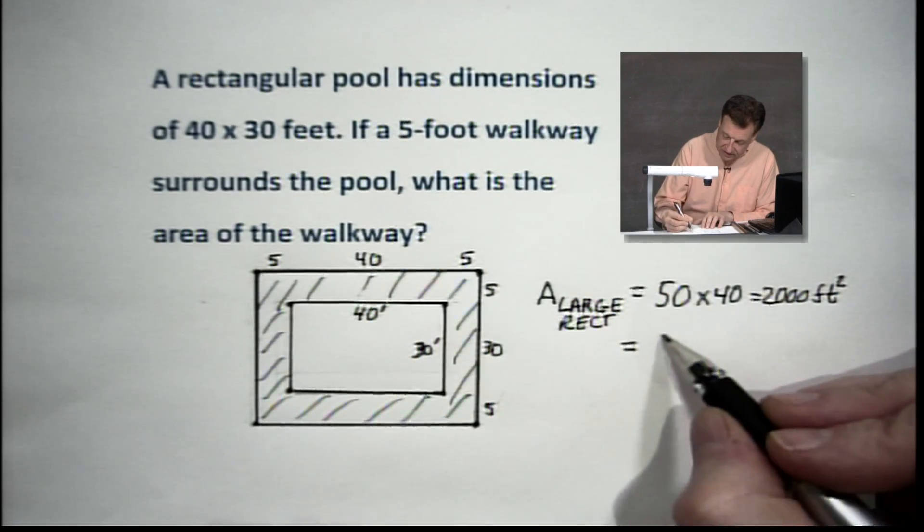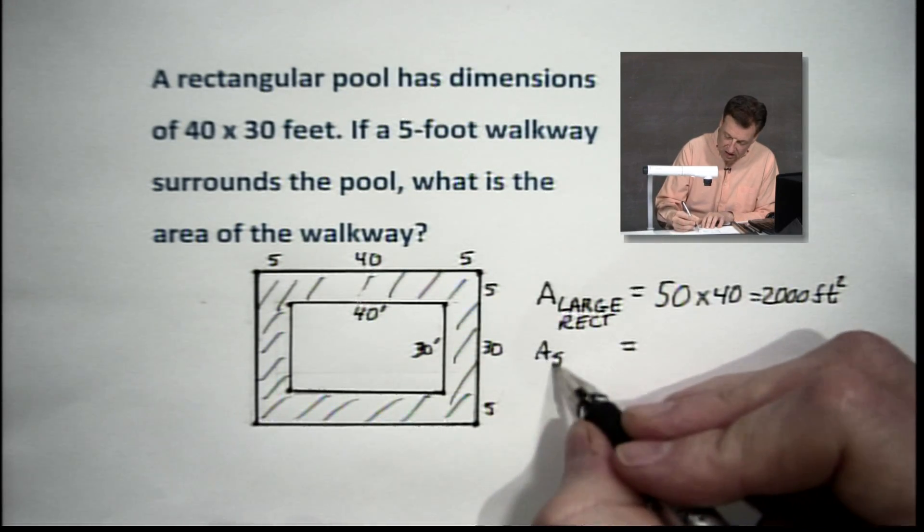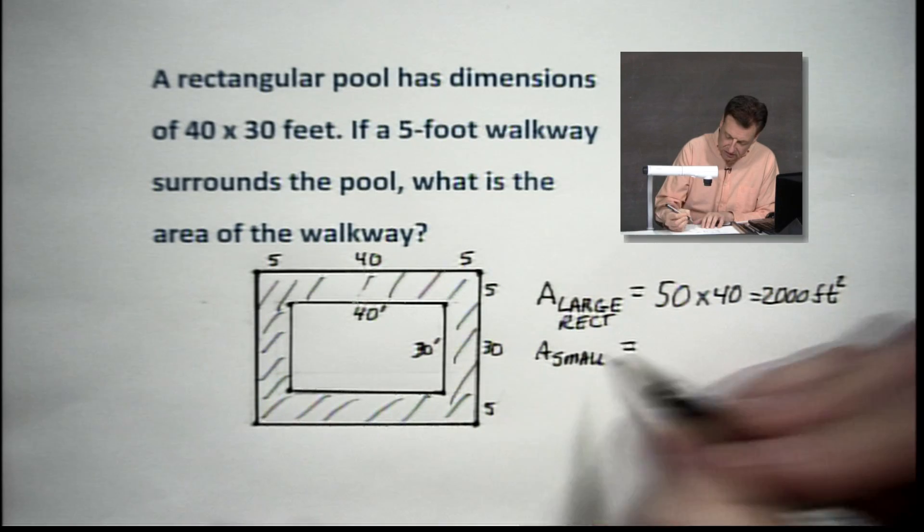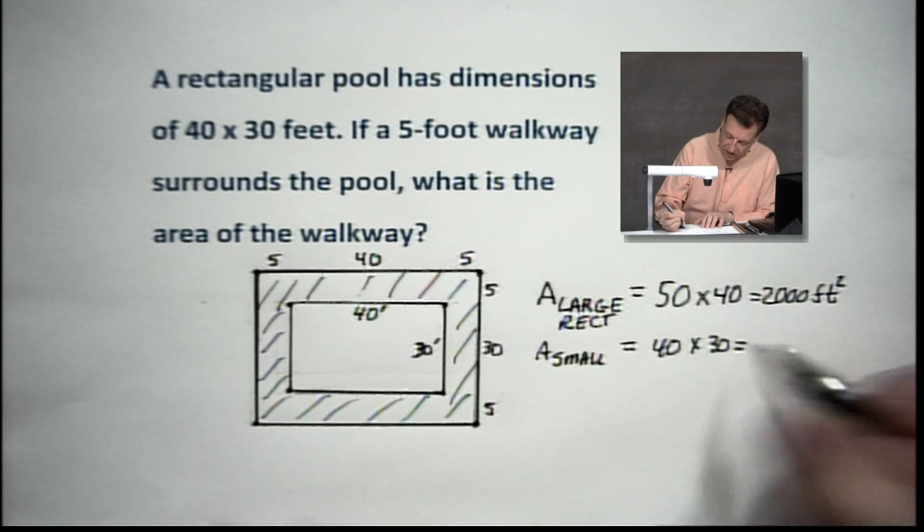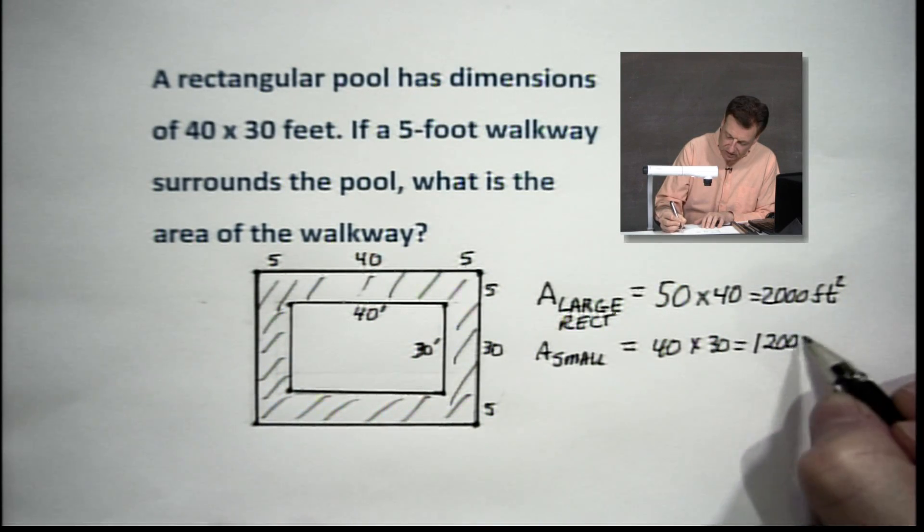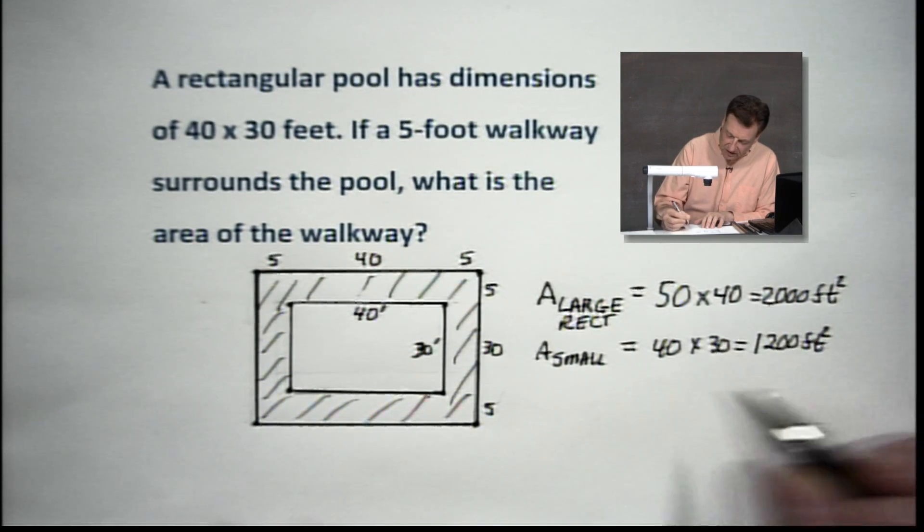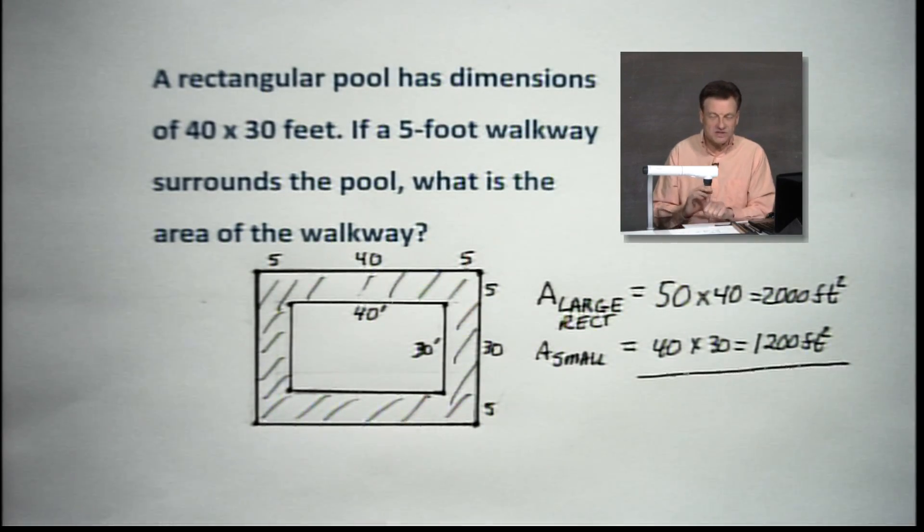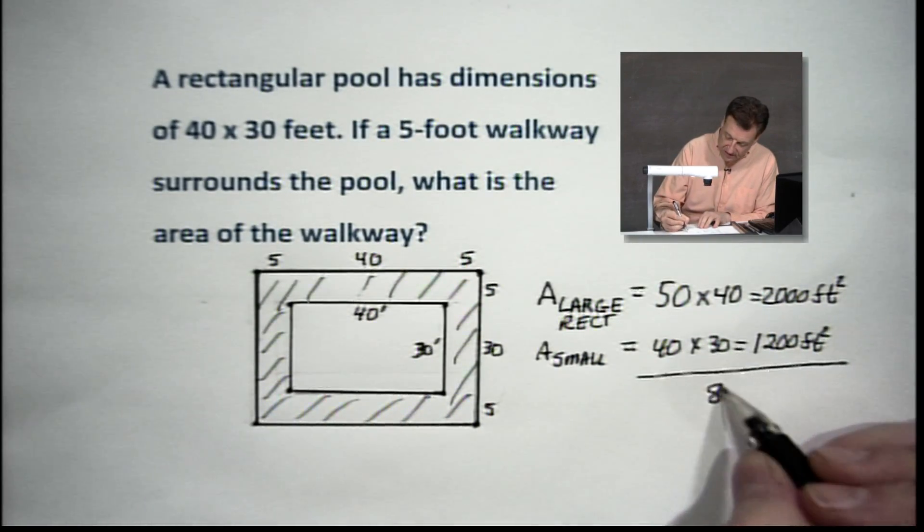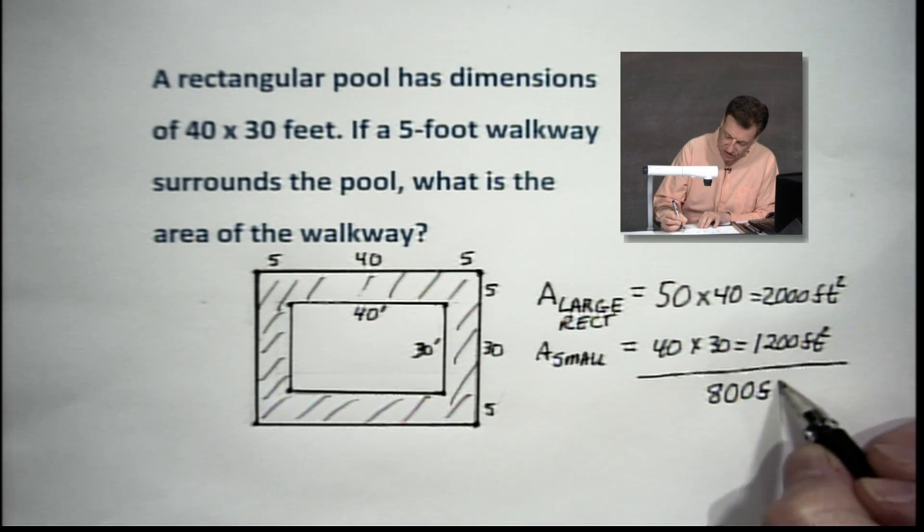And here we go. The inside, that was easy. The area of the small equals 40 times 30, which is going to be 1,200 square feet. And we're going to subtract these. We're going to subtract these two numbers and get what's on the inside. And it looks like it's going to be around 800 square feet.